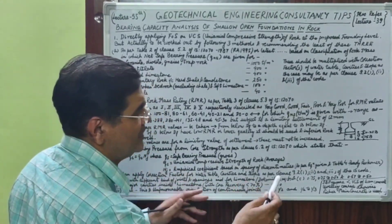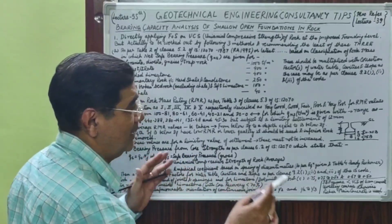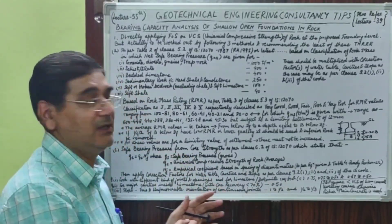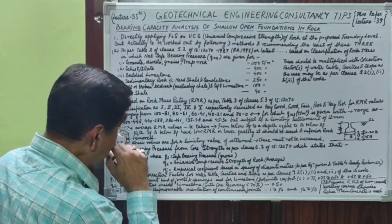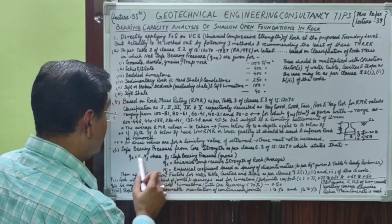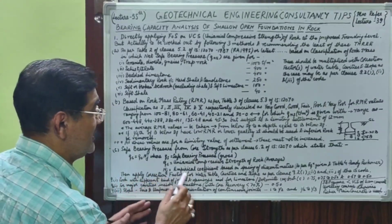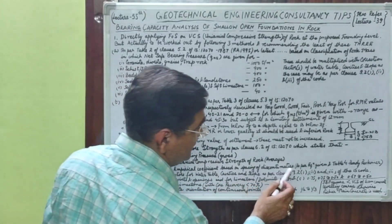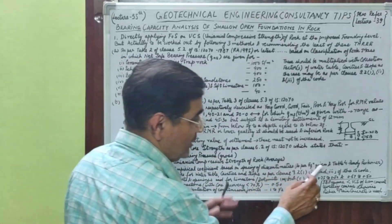The influence zone typically extends to 1.5B below the foundation, but can range from 1B to 2B depending upon the kind of structure which is to be built at the site.